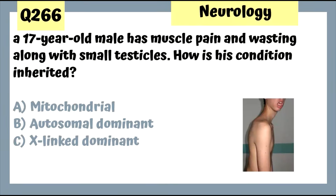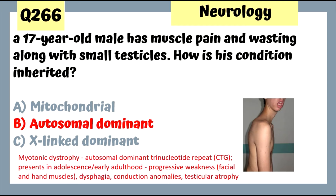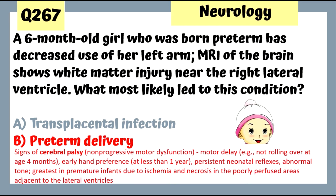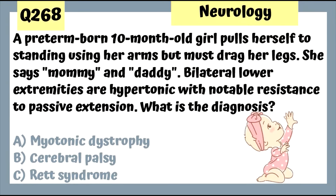Question 266: A 17-year-old male with muscle pain and wasting along with small testicles — this is myotonic dystrophy, inherited in autosomal dominant fashion. Question 267: A 6-month-old girl born preterm has decreased use of her left arm; MRI shows white matter injury near the right lateral ventricle — preterm delivery is a risk factor for cerebral palsy.